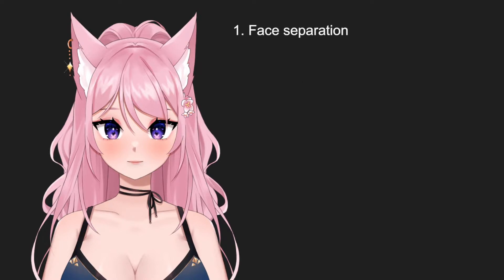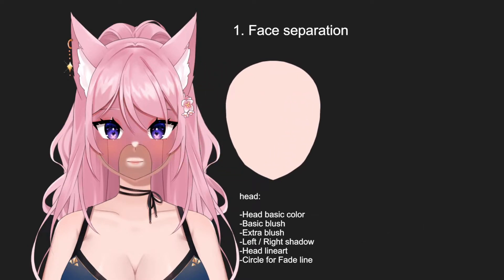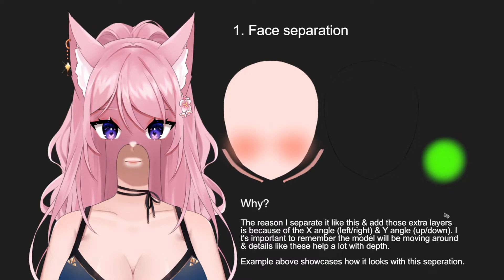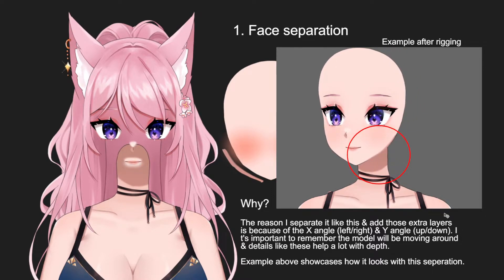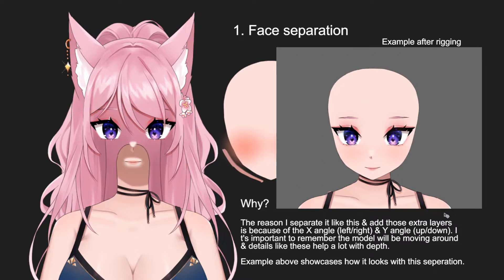Now moving to the main part of the guide — I'll be showcasing how I separated each part of this model and explaining why. For the face separation, specifically the head, I have the head basic color, basic plus, and extra plus which is optional, left and right shadow, left and right shadow headliner, and a circle for the fade line when rigging. I separated it this way because of the X angle (left and right) and the Y angle (up and down) — details like this help a lot with depth and give the model a 3D feeling and dimension.